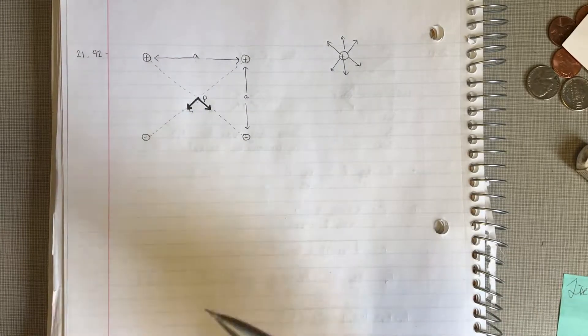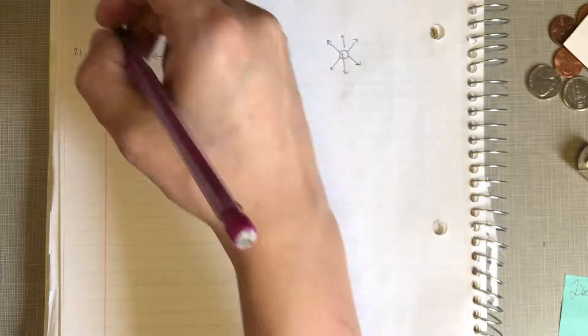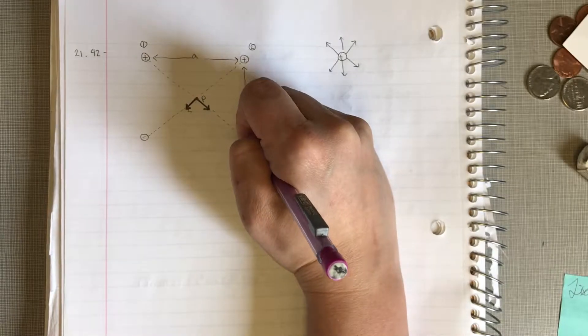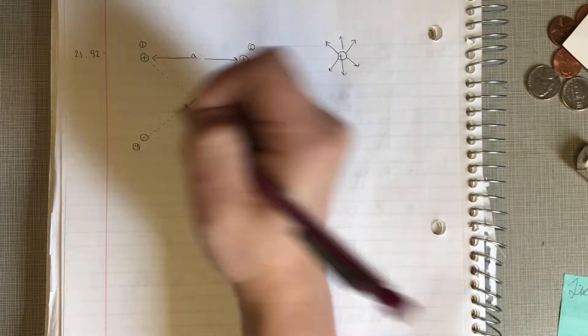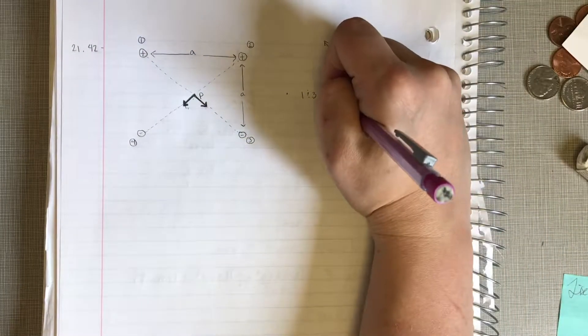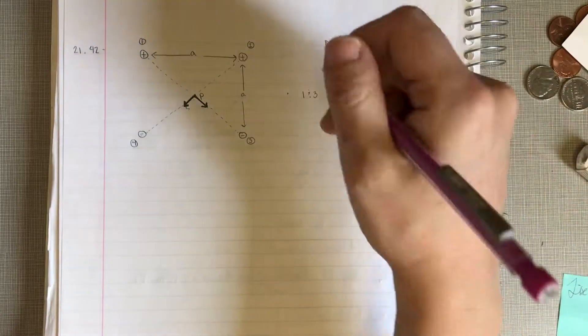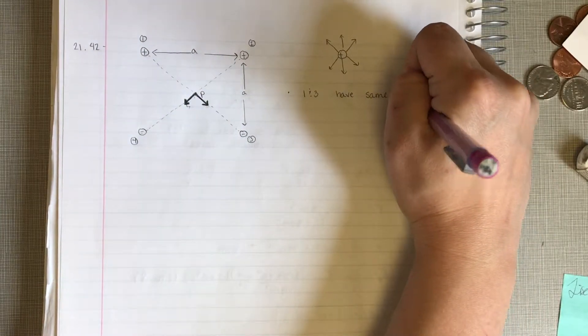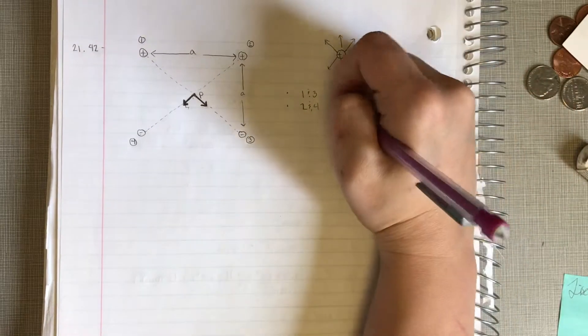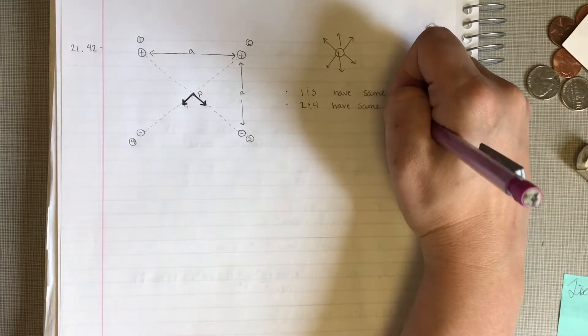So, there are four separate fields here, but they're adding together to be in the same direction, if that makes sense. So, I'm going to number these just to help us keep track. So, we've got one, two, three, and four. Now, we're going to write some notes just so we don't forget. So, charges one and three are going to have the same field because they're the same strength and they're the same distance away. And similarly, charges two and four are going to have the same field because they're the same value of charge and the same distance away.